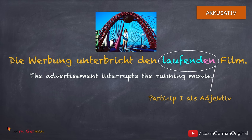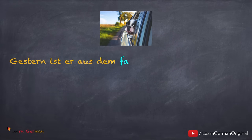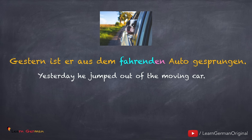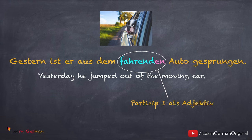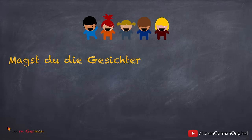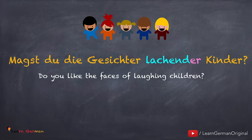Wenn du Adjektivendungen wiederholen willst, kannst du unsere Videos zu diesem Thema sehen. Die Links sind unten in der Beschreibung. Hier ist das nächste Beispiel: Gestern ist er aus dem fahrenden Auto gesprungen. In diesem Fall ist aus eine Dativpräposition, so bekommt fahrend die Endung -en.